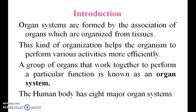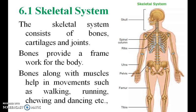Major organs in the body include the kidney, heart, brain and others — these together form organ systems. The human body has eight major organ systems. The eight organ systems are: skeletal system, muscular system, digestive system, respiratory system, circulatory system, and nervous system. The skeletal system consists of bones, cartilages, and joints.